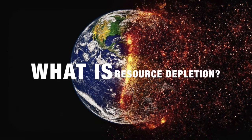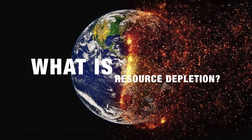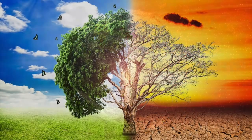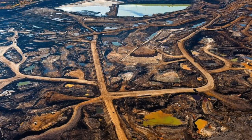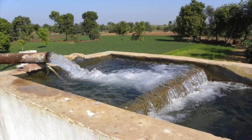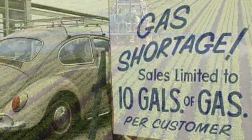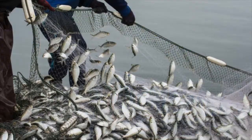Resource depletion happens when renewable and non-renewable resources are consumed at a rate that is faster than they can recover. Because of this fast consumption, natural resources may eventually be exhausted. The term resource depletion is usually associated with water usage, farming, fossil fuel consumption, and fishing.